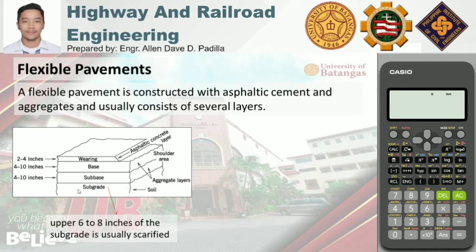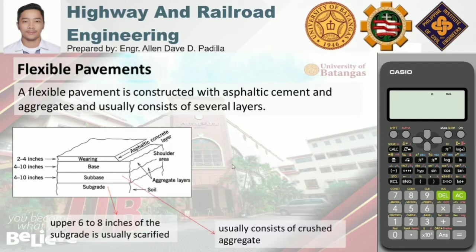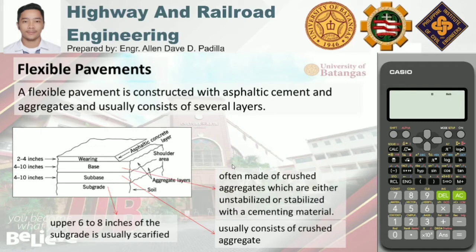To determine the rate of compaction or how dense it has become, we use what is called the field density test, which determines how dense the subgrade is before we lay the subbase. The next layer is the subbase, which is usually 4 to 10 inches thick and usually consists of crushed aggregate. Then the next one is the base, also 4 to 10 inches thick, often made of crushed aggregates that are either unstabilized or stabilized with a cementing material.